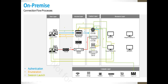Once the credentials are validated, the controller checks with the database to determine what applications and desktops the user has access to. Once the controller verifies the application access level with the DB, those application details are passed back to the controller, which then passes them to StoreFront. StoreFront then displays the list of applications to the end user.